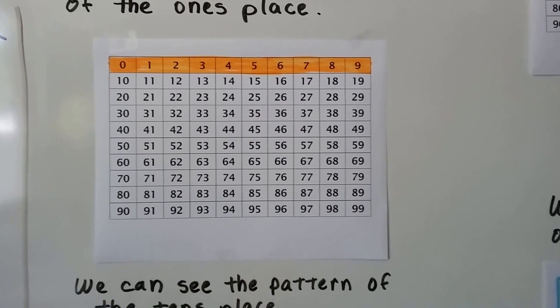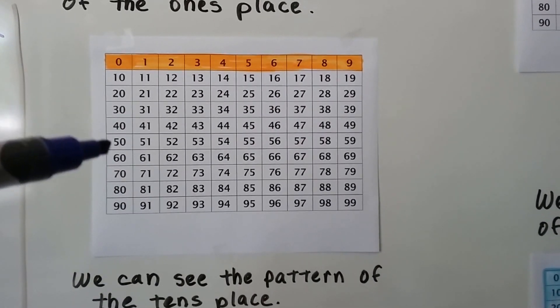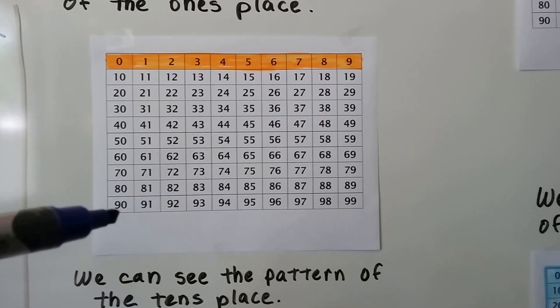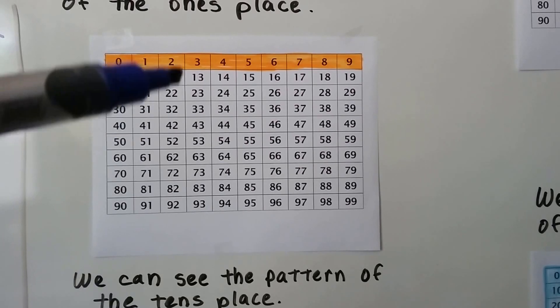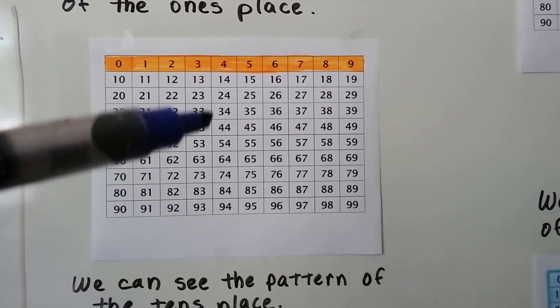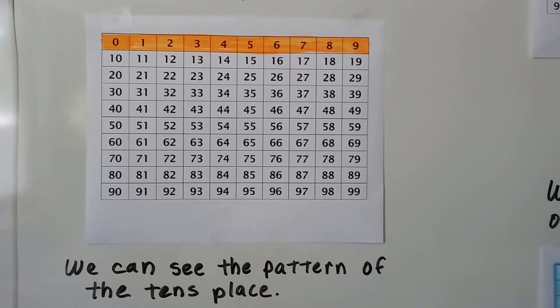We can see the pattern of the tens place also. It goes 1, 2, 3, 4, 5, 6, 7, 8, 9 and it does that in every column. They all go from 1 to 9 in every column all the way to the end.